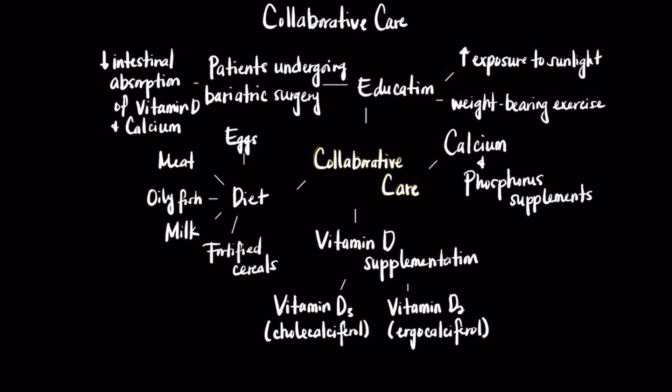Other educational pieces include teaching patients to increase their exposure to sunlight and implementing weight-bearing exercises to combat weakness that is apparent with this disease. It's also important to ensure that patients undergoing bariatric surgery have normal levels of calcium and vitamin D prior to the procedure, because there will be decreased intestinal absorption of calcium and vitamin D as a result of the procedure itself.